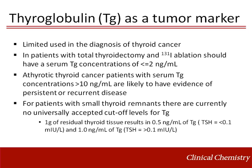The primary use of serum thyroglobulin measurement is in the follow-up of patients with differentiated thyroid cancer following total thyroidectomy and radioactive iodine ablation. The American Thyroid Association guidelines for the management of differentiated thyroid cancer suggest that athyroidic thyroid cancer patients should have unstimulated serum thyroglobulin concentrations equal to or less than 2 nanograms per milliliter. Patients with higher levels should be investigated for persistent or recurrent disease. Furthermore, athyroidic thyroid cancer patients with unstimulated or stimulated serum thyroglobulin concentrations greater than 10 nanograms per milliliter are likely to have evidence of persistent or recurrent disease.